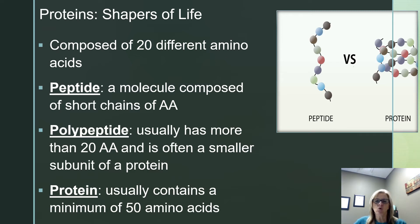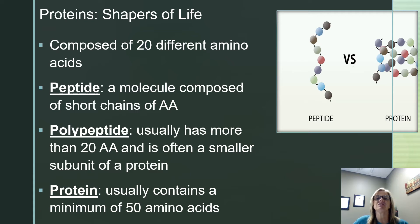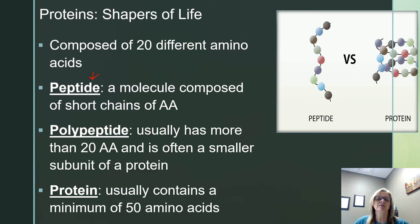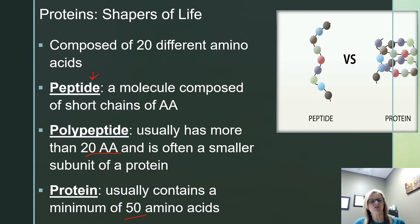The way a protein folds is going to be related to its shape, which then dictates its function. We have a few different ways of classifying proteins. A peptide is a short protein with short chains of amino acids. A polypeptide — meaning many peptides — has more than 20 amino acids. If we say 'protein' specifically, that would be more than 50 amino acids. The words peptide, protein, and polypeptide are really all just about size.